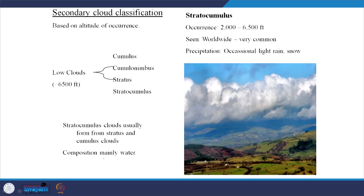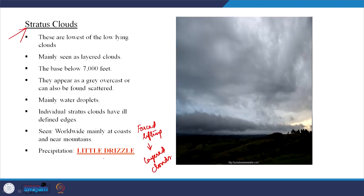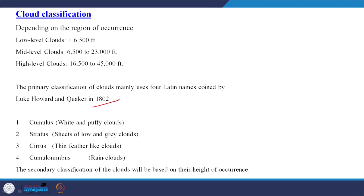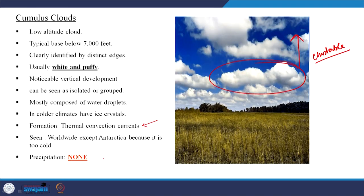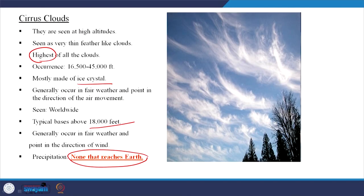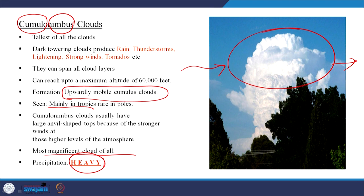Now we will look into the secondary classification. To summarize: we have seen what a cumulus cloud is, how it forms, what a layered cloud is, what a high feathery cloud is, and what happens when a cumulus cloud grows vertically upwards and reaches very high altitude — you call it the cumulonimbus cloud. We will learn about the secondary classification in the subsequent lecture.